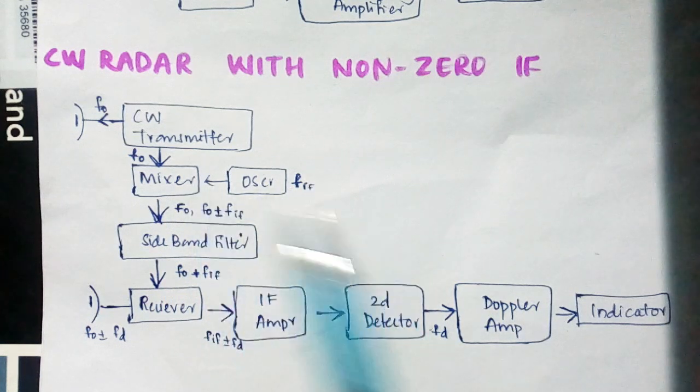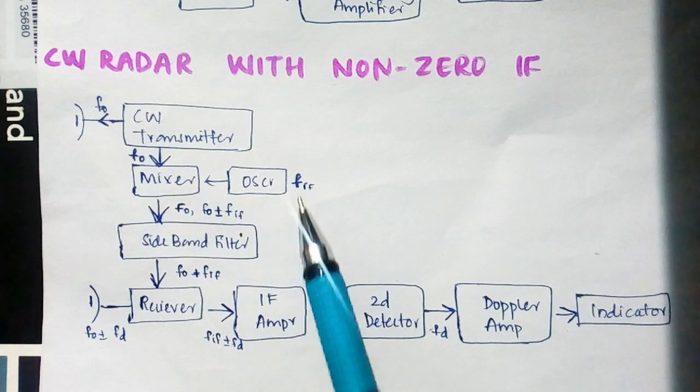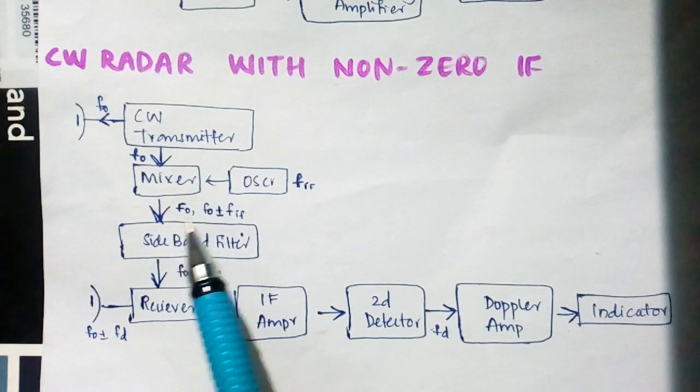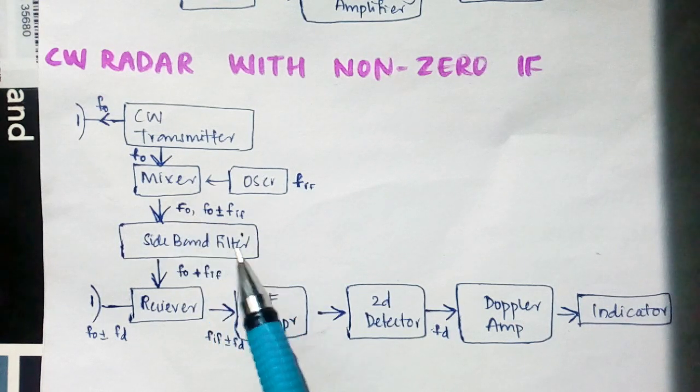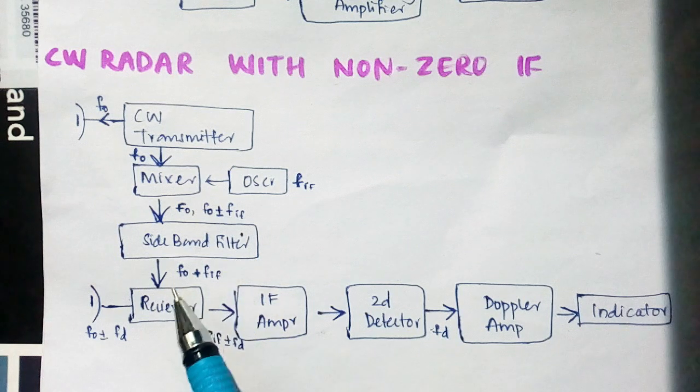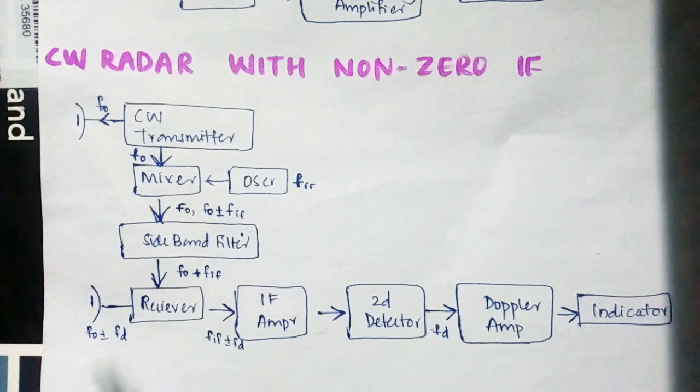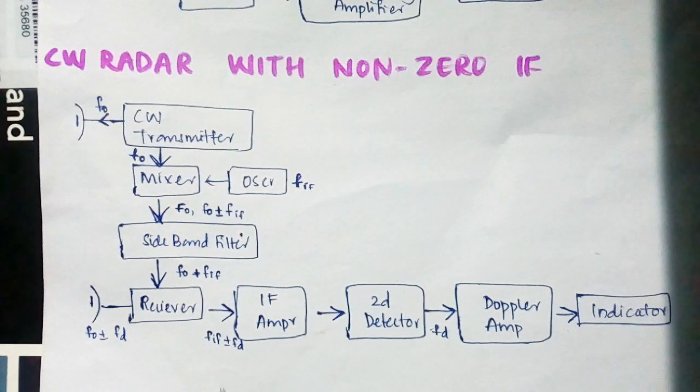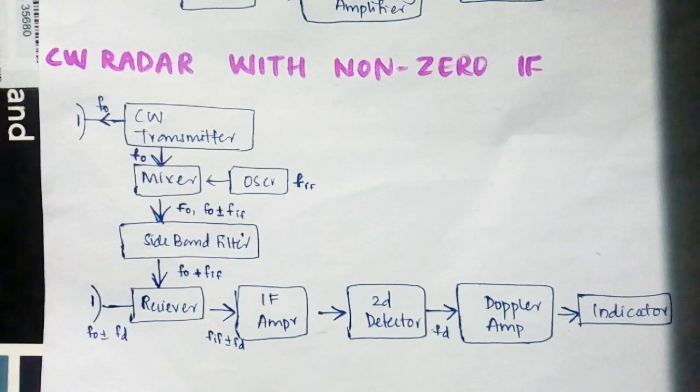A local oscillator with fif frequency produces f0 plus or minus fif. Using a sideband filter we are taking f0 plus fif. Comparing these two signals we cancel out f0 frequency, and the remaining we get is fif plus or minus fd, where fif means intermediate frequency and fd means Doppler frequency.